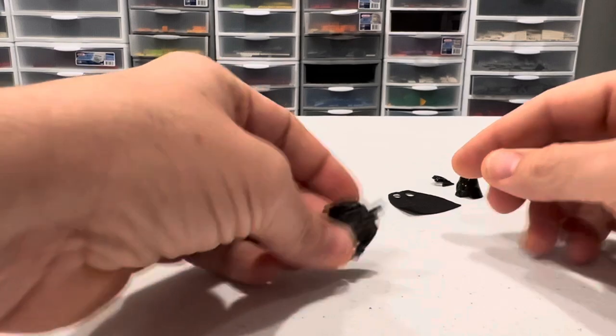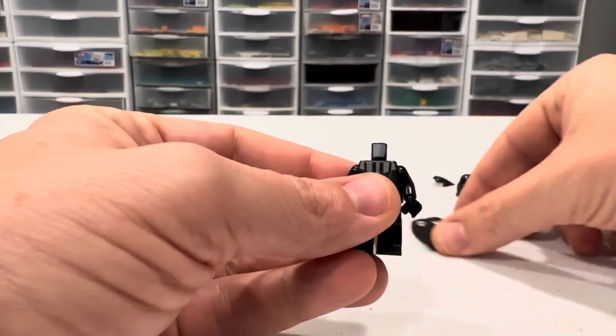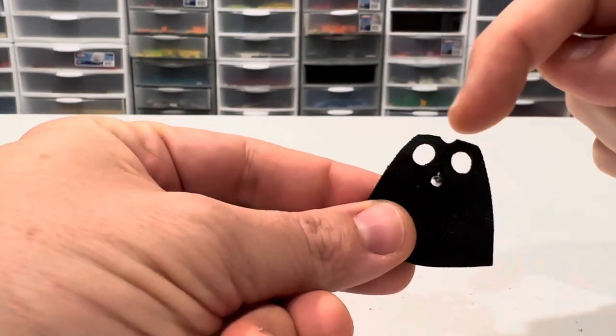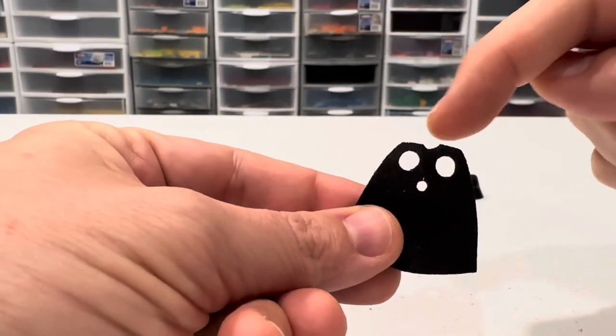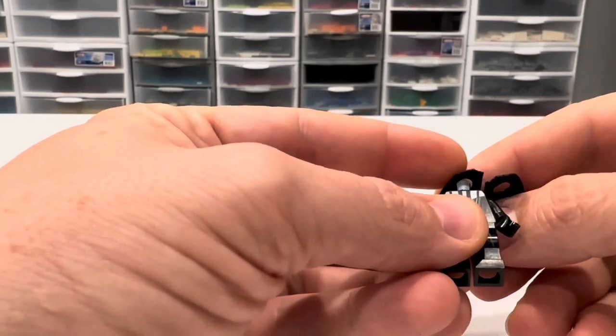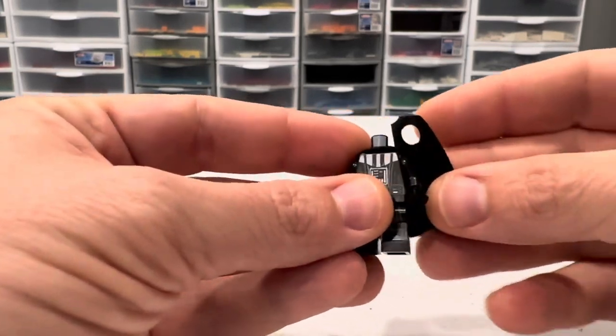Check this out. Very simple. We have our friend Darth Vader here. We have our cape. These two holes are both holes that go over the neck tube. Watch. One goes over the neck tube like this.